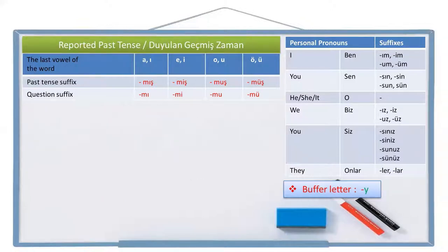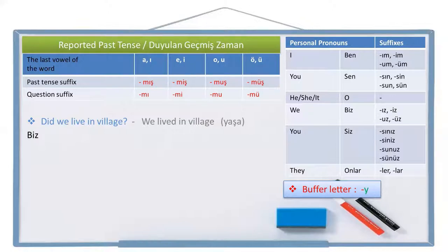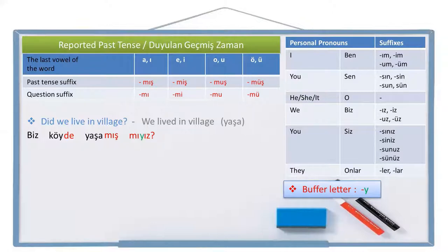Let's continue with the plural ones. Did we live in the village? Live is 'yaşa' in Turkish. Let's write the positive sentence: we is 'biz', village is 'köy', in the village is 'köyde', live is 'yaşa', lived is 'yaşamış'. Now we leave a space and write the question suffix 'mü' and the person pronoun suffix. Two vowels are together, so they need a buffer letter between them. Biz köyde yaşamış mıyız? Did we live in the village?